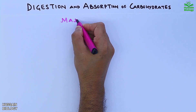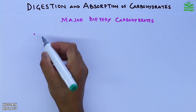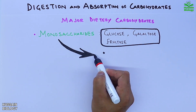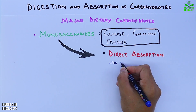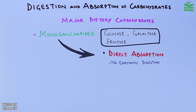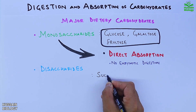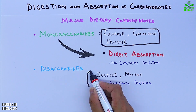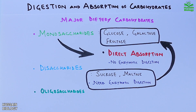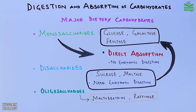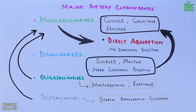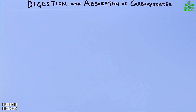First we see the major dietary carbohydrates available in food. We have monosaccharides like glucose, galactose, and fructose — these show direct absorption, meaning no enzymatic digestion is needed. Next are disaccharides like sucrose and maltose, which need digestion and are broken down into monosaccharides. Then we have oligosaccharides like maltodextrins, and finally polysaccharides like starch and amylopectin, which are also broken down into monosaccharides for absorption.